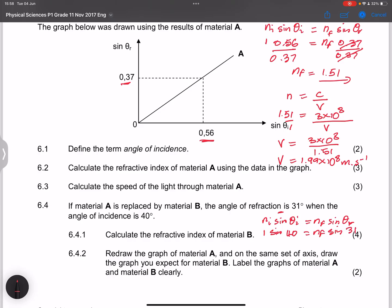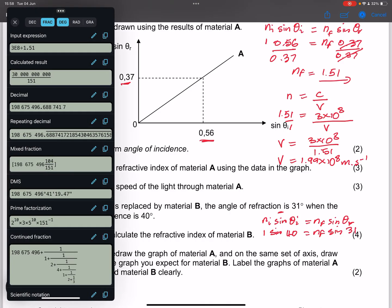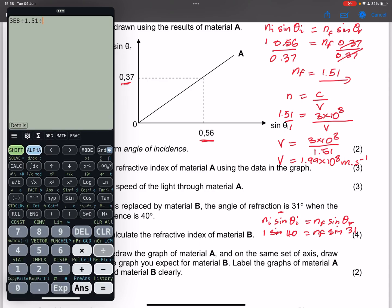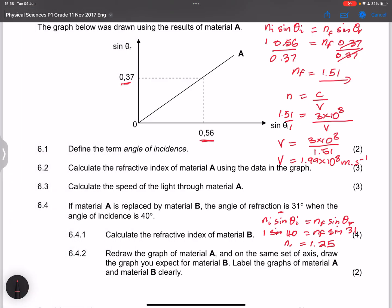So let's try and get that. So this would give us, we're going to have sine of 40 divided by the sine of 31. And I get 1.25. So the refractive index in this case will be 1.25. So there we have it right there.